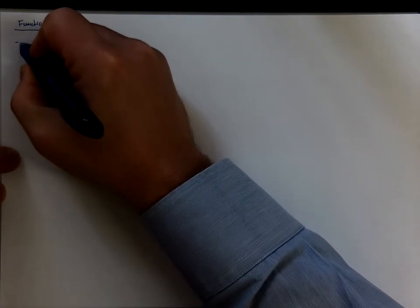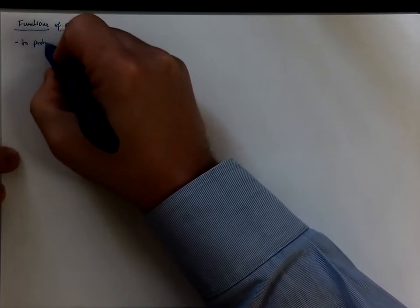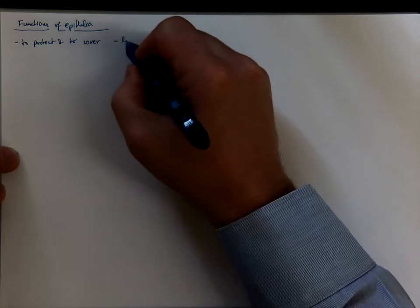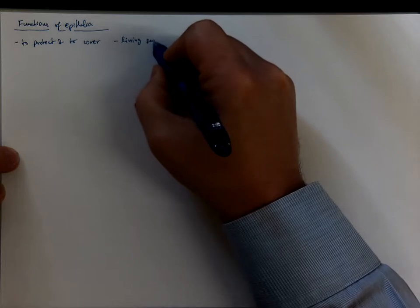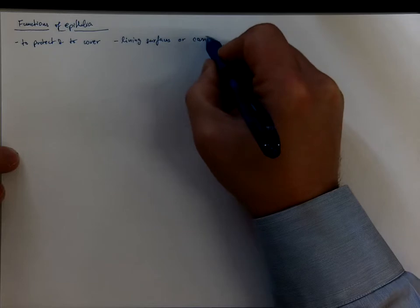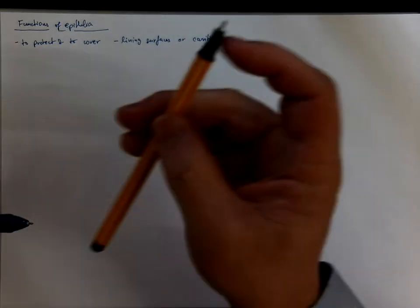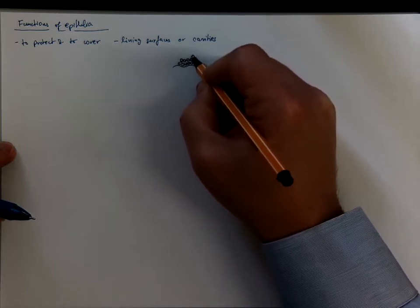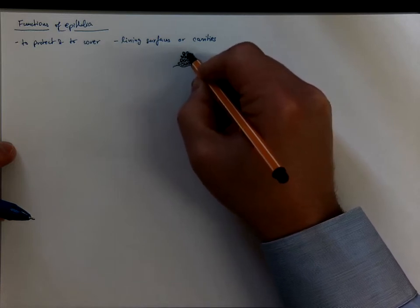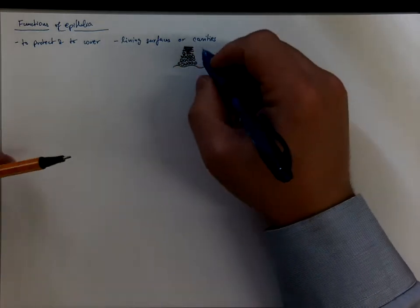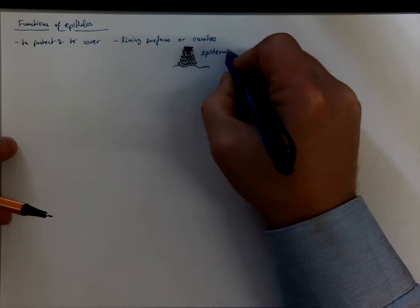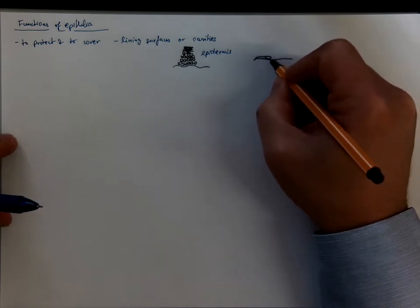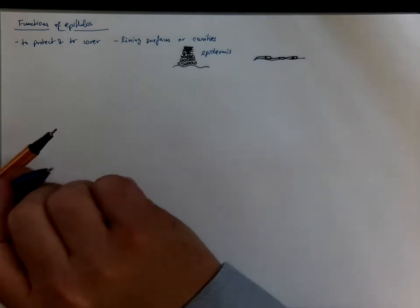A very common function is to cover and to protect, either internal or external surfaces, so the epithelia might be lining surfaces or cavities. A good example would be epidermis, the stratified squamous keratinized epithelium that protects the skin, and an inner cavity lined with epithelium could be the peritoneal cavity which is lined with mesothelium that has a shape of simple squamous epithelium.